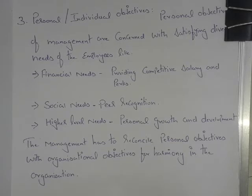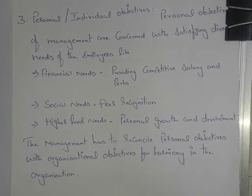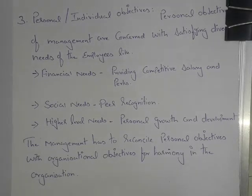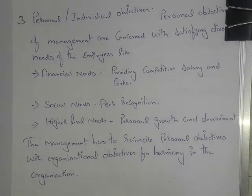To sum up the objectives of management: there are three important objectives — organizational, social, and individual. Organizational objectives have three basic sub-objectives: survival, profit, and growth. Survival means an organization must earn enough revenues to cover cost. Profit is essential to meet the cost of business and overcome business risk. Growth denotes expansion of the business over markets and its potential, measured by increase in number of products and capital investment.